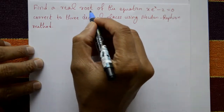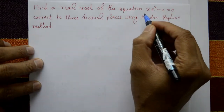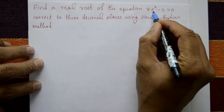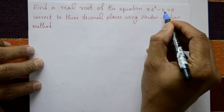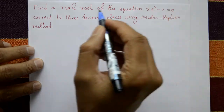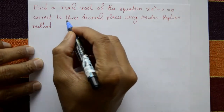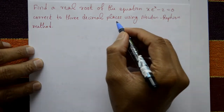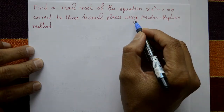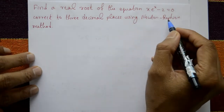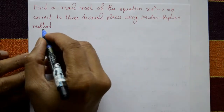Find a real root of the equation x·eˣ minus 2 equal to 0, correct to three decimal places using the Newton-Raphson method.